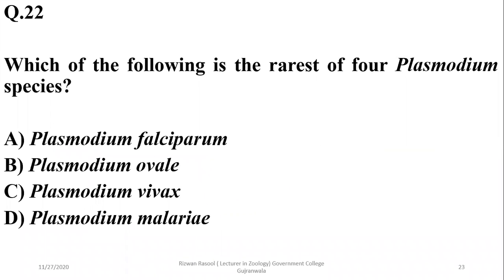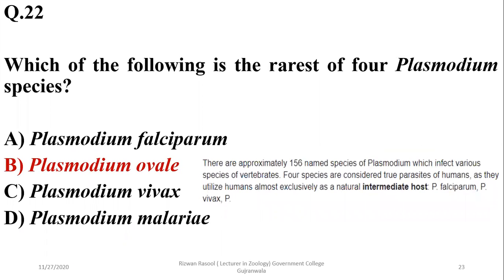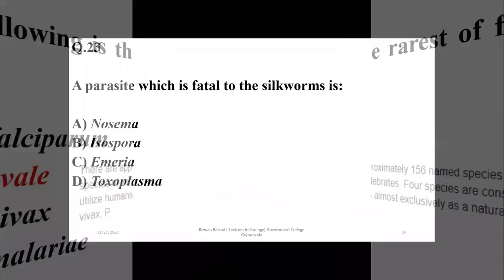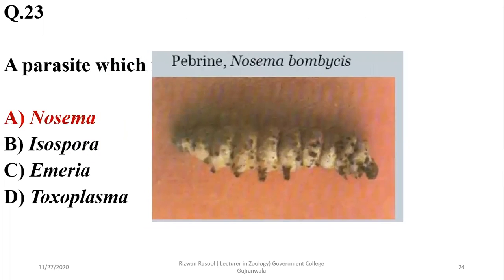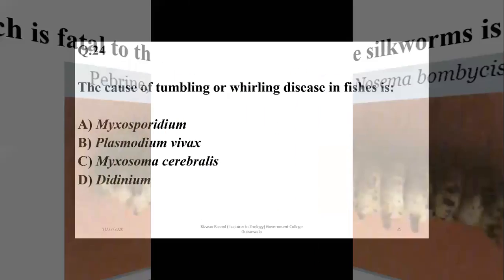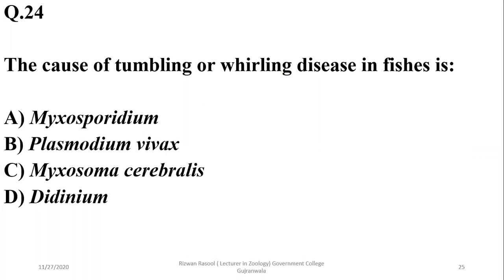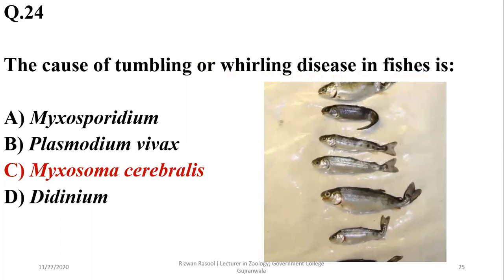Question twenty-two: the rarest of the four Plasmodium species is Plasmodium ovale. Question twenty-three: a parasite fatal to the silkworm is Nosema bombycis, which causes pébrine disease in the silkworm — correct option A. Question twenty-four: the cause of whirling disease in fishes is Myxosoma cerebralis, which infects many fish species — correct option C.